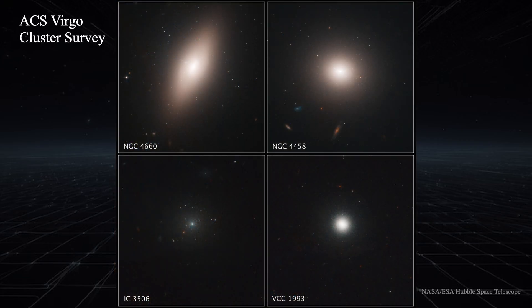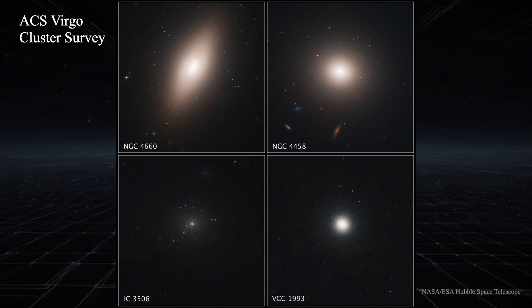These Hubble Space Telescope images show four members of the Virgo Cluster of Galaxies, the nearest large galaxy cluster to us. NGC 4660 and NGC 4458 are good representatives of normal elliptical galaxies, while IC 3506 and VCC 1993 along the bottom are dwarf ellipticals. In general, ellipticals contain very little or no gas or dust — we don't see any HII regions with their pink glows, nor dark lanes obscuring stars behind them. This lack tells us that star formation ended billions of years ago, and therefore they contain only old Population II stars. Their stars move in random orientations, and these galaxies are frequently the end-state of merging events. Now let's see what other kinds of galaxies live in our cosmic zoo.